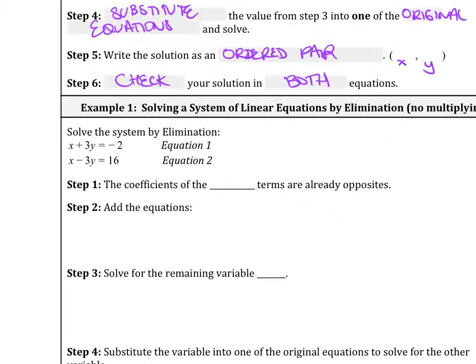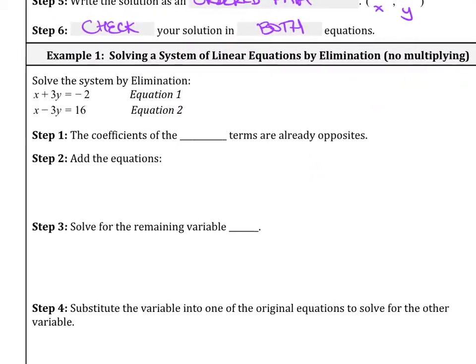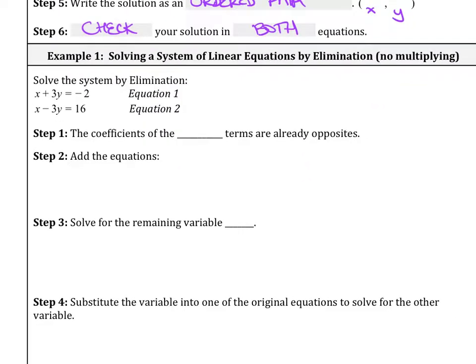So let's go ahead and try this example here. We're going to solve this system by elimination, no multiplying in this case. If we take a look at this example, we have x plus 3y equals negative 2 and x minus 3y equals 16. So you take a look at it, what do we want to eliminate first? We want to see that if I added them together, is there something that will cancel out?